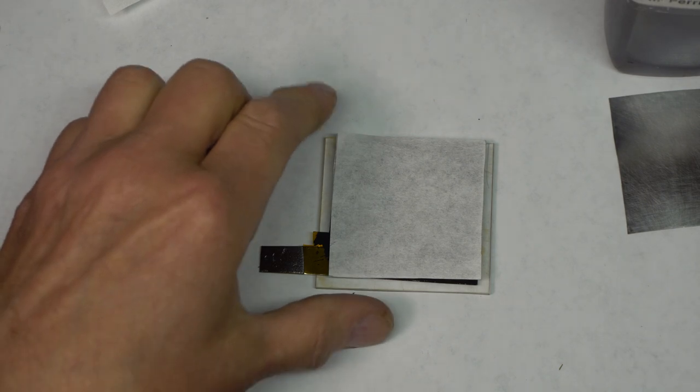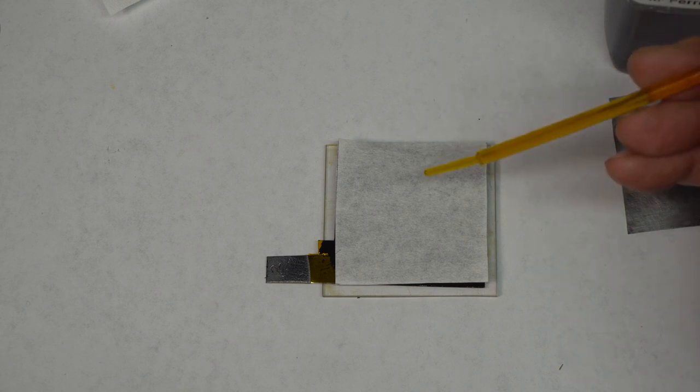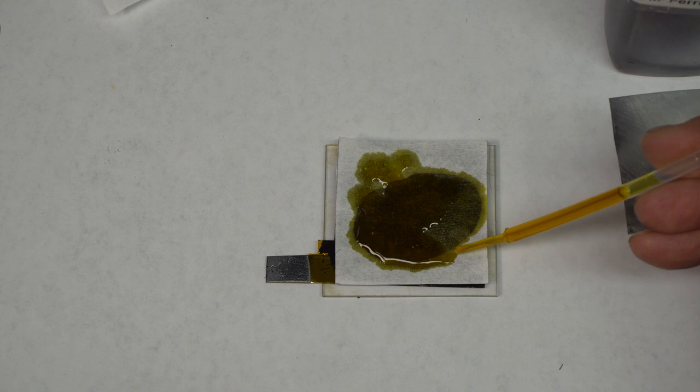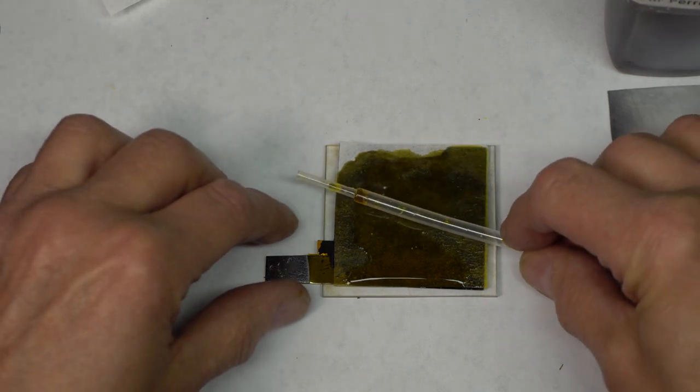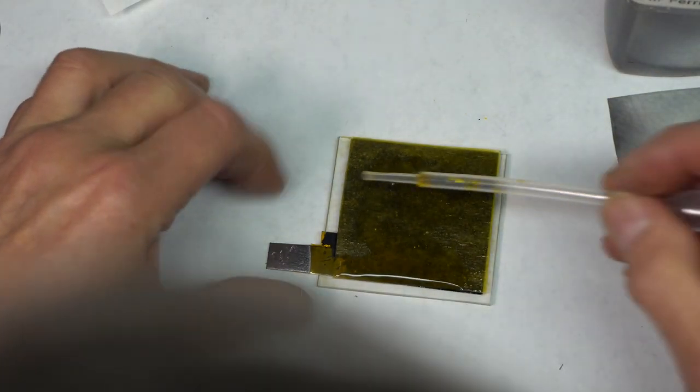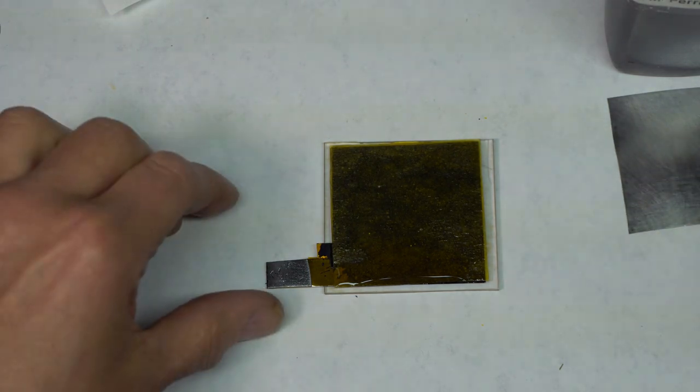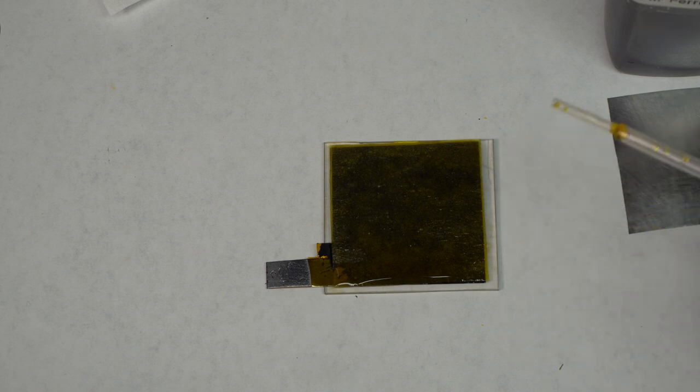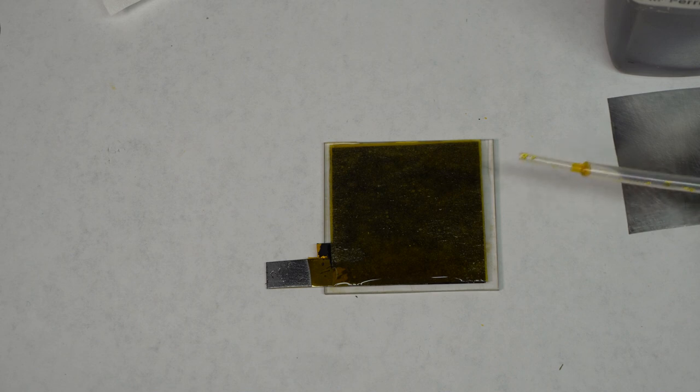Okay. Now the separator is now saturated with electrolyte, which is two molar ferric chloride. So that now is just left long enough so both the separator and the active carbon coating is saturated with electrolyte. About 20 minutes is probably long enough.